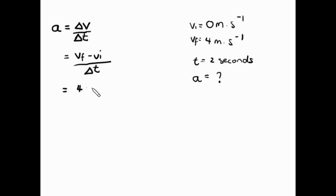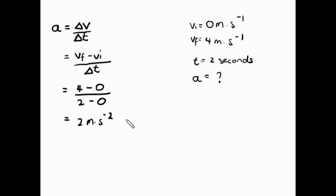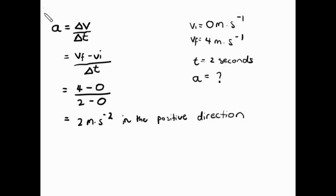Our final velocity was 4 minus 0 (initial velocity), all over 2 minus 0, because there was no initial time offset — just 2 seconds. We get an answer of 2 meters per second squared in the positive direction. Let's check: 4 minus 0 is 4, 2 minus 0 is 2, 4 divided by 2 is 2. SI units are correct, and direction is stated. The answer is correct. That's question 1 — done.